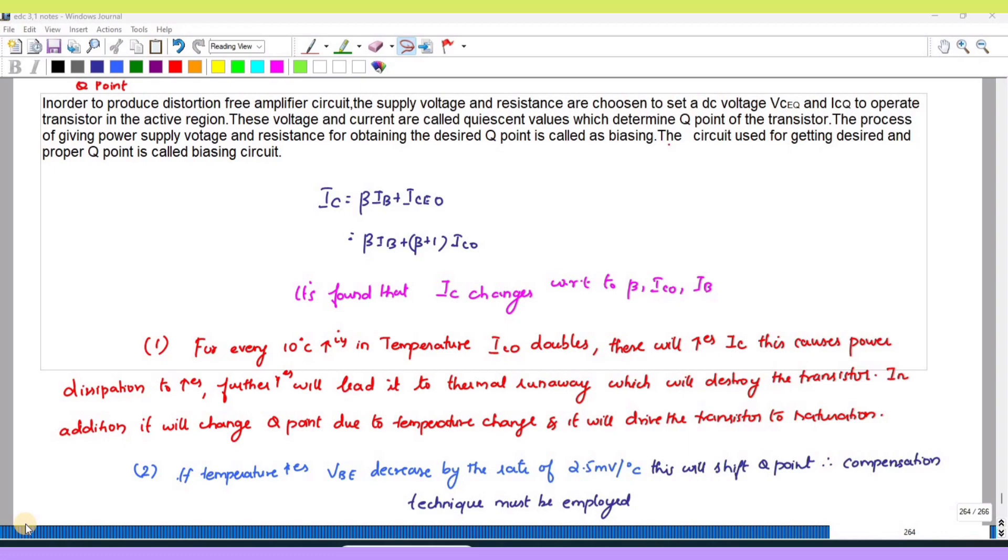So the quiescent point gets altered by these parameters. Why is it changing? Because these three parameters are dependent on temperature.